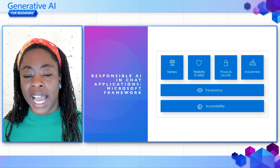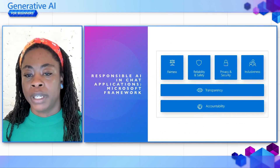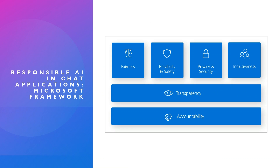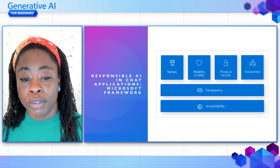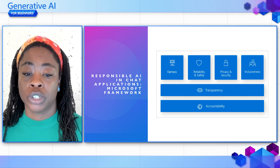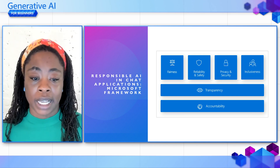Another component for a high-quality chat application is using AI responsibly. Microsoft has an approach to responsible AI split into six principles that should guide AI development and use. It's important to build trust and inclusivity among your users, prevent harm, protect their data, and provide improvement and corrective measures in case of mistakes.